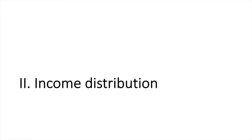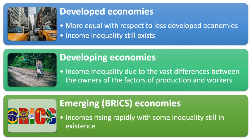Next up is the distribution of income. For developed economies, it is argued that there is typically a more equal distribution of income than you would find in less developed economies. While income inequality still exists, it is to a lesser degree than seen in developing economies. The Gini index in Iceland in 2015 was approximately 26.8. Developing economies suffer from high levels of income inequality due to the vast disparities between the owners of the factors of production and labour. Honduras had a Gini index of 52.1 in 2018. In the emerging economies, incomes tend to rise rapidly with some inequality still prevalent. China's Gini index was approximately 38.5 in 2016.